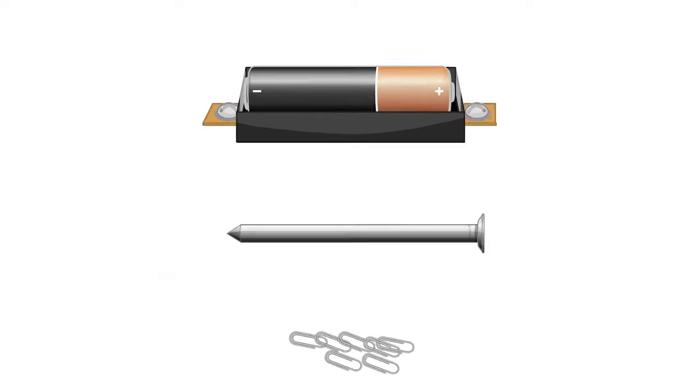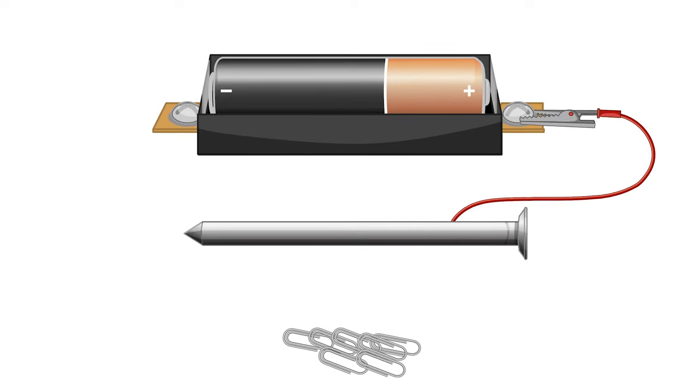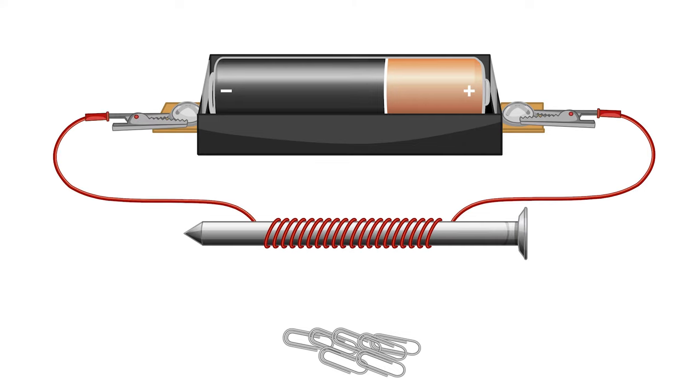Let's connect one end of the wire to the battery and wrap the wire around the nail. Now connect the other end of the wire to the other end of the battery. Cool, we've made an electromagnet.